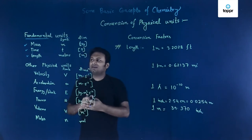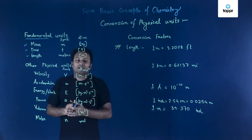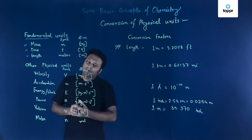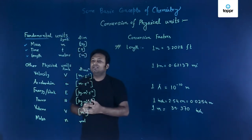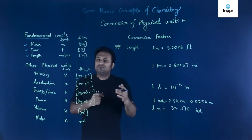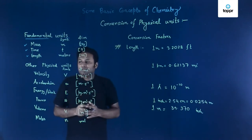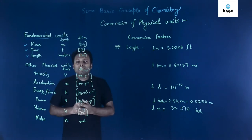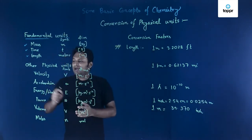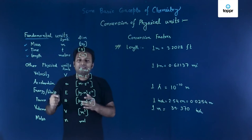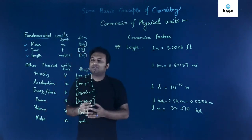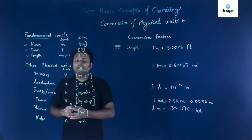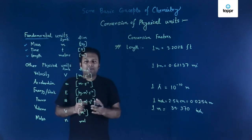There are other fundamental units as well: moles, temperature, and luminous intensity. These are also fundamental units but are relatively less used. Now let us discuss some derived units — there are many derived units, actually n numbers of derived units in nature.